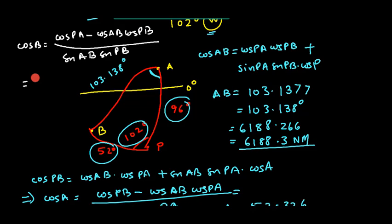Cos of PA 96 minus bracket start cos of AB which is 103.138 into cos of PB which is cos of 52 bracket close, divided by bracket start sin of AB which is 103.138 and sin of PB sin of 52 bracket close. I get this value and then shift and cos inverse. So I hope you get this value which is 87.9 degrees.